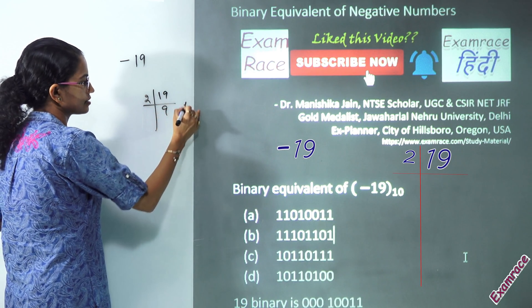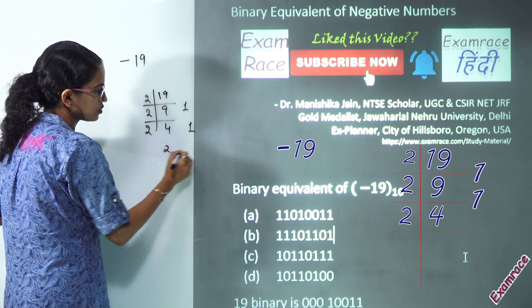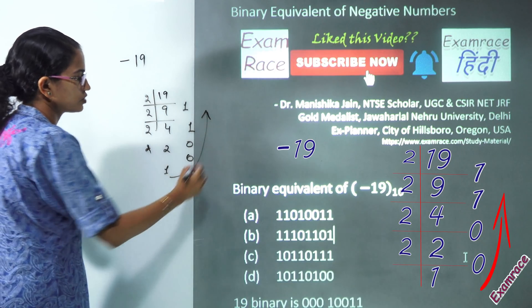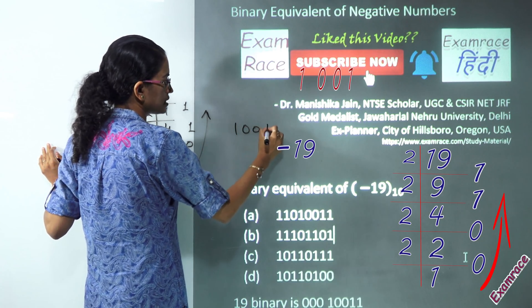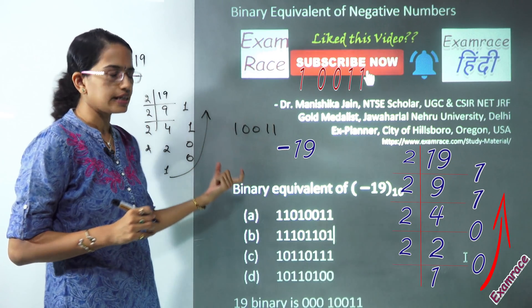So, when I solve it for 19, it says 2, 4, 1. So, you have 2, 2, 0, 2, 1, 0. So, that's how you have the number. It becomes 1, double 0, 1, 1. Now, this is the binary equivalent for 19.